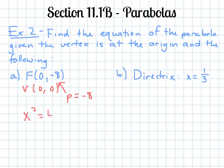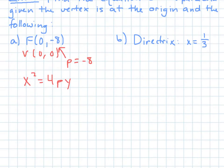So then I'm going to start with the general equation. I'll plug in my p. And so 4 times negative 8 gives me negative 32. And so there's my equation.